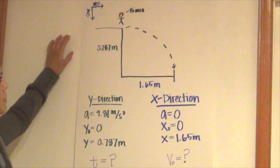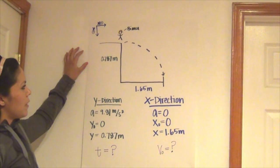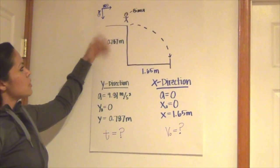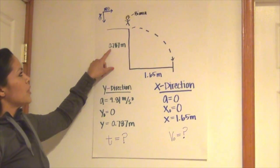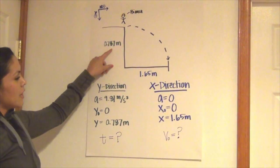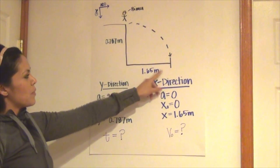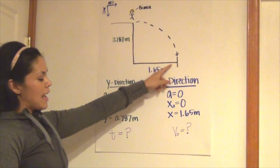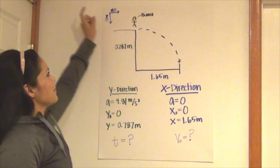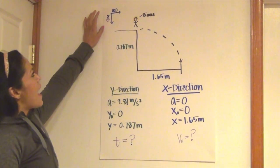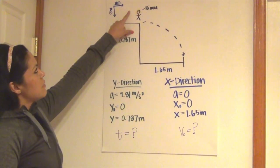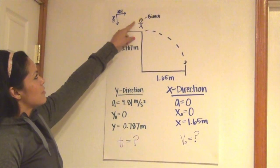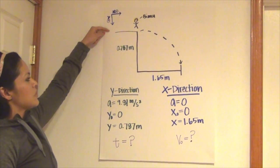Okay, so the first thing we did to solve this problem of Bianca jumping off the bed was we drew it out. We know that the bed is 0.787 meters high and she is jumping 1.65 meters out. We chose x to be positive in that direction and y coming down is positive.